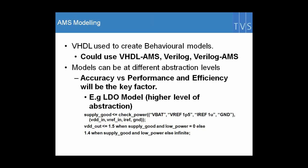Here we have an example of a model with a very high level of abstraction. We check the battery, the reference voltages, the reference currents, and the ground. Based on the mode of operation — whether it is low power or high power mode — we drive the output of the regulator. The accuracy and the level of abstraction depend on your performance requirements and simulation time. You can select the level as per the need and as the design matures.